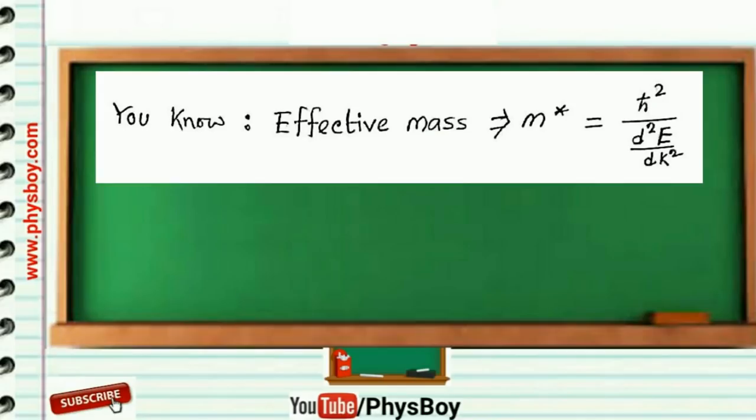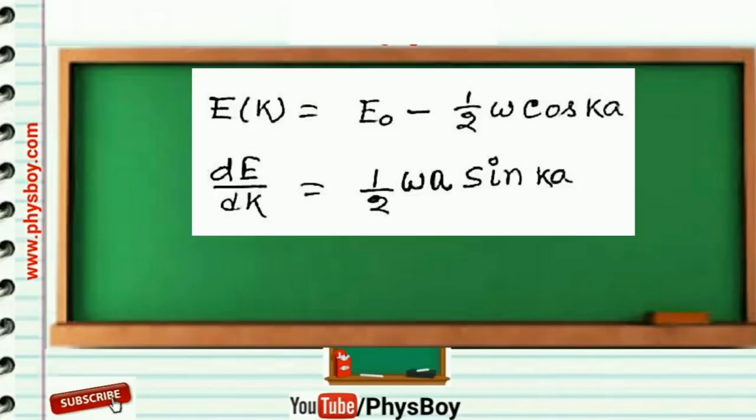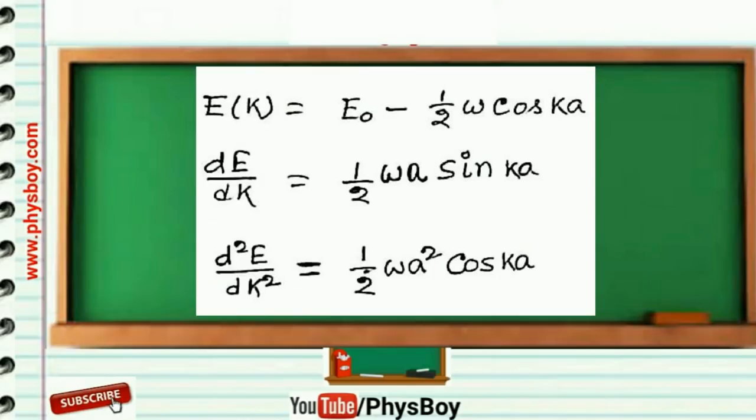And second-order derivative of E with respect to K is equal to ½ωa² cos(Ka). So effective mass becomes ℏ² divided by ½ωa² cos(Ka).